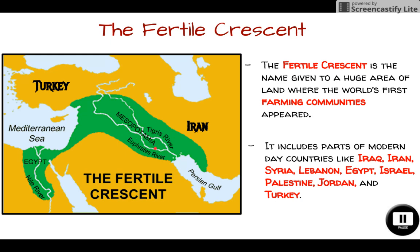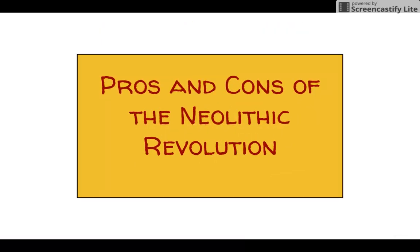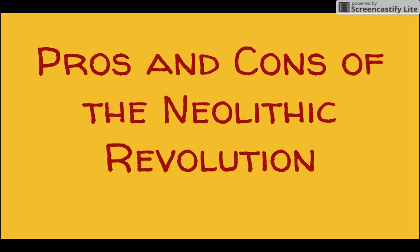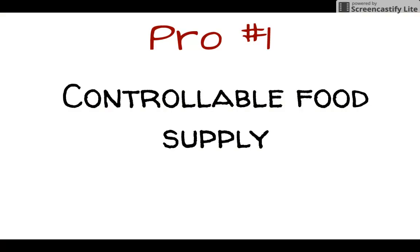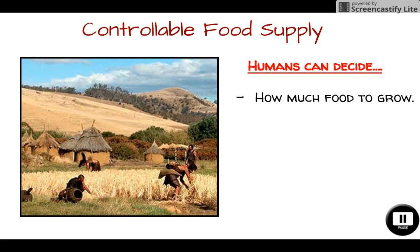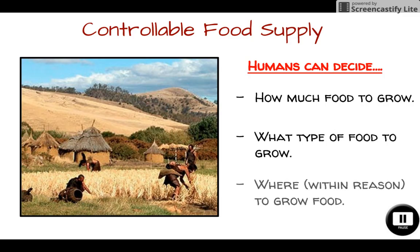Getting into the topic of this video, we're going to start looking at the pros and cons of the Neolithic Revolution, beginning with the big pros. Arguably the biggest positive we gain from agriculture is the fact that we can control the food supply — we can decide how much food we want to grow, what type of food, and within reason where we'd like to grow it. Whereas the hunter-gatherer simply ate what they could find or hunted.